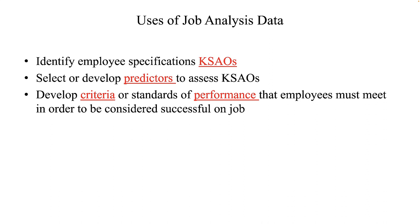Third, job analysis data may be used to develop criteria, or standards of performance, that employees must meet in order to be considered successful on the job. Criteria and measures are used in the performance appraisal process to ensure that employees are meeting acceptable performance and productivity levels. Also, these criteria are used in the process of validating selection predictors by determining the strength of the relationship between predictor scores — that is, test scores on selection instruments — and criterion scores, that is, a numeric score for job performance. In other words, scores on predictors used in the selection process should show a strong positive relationship with scores or ratings on subsequent on-the-job performance by employees. Our ultimate goal is to predict employees' job performance.